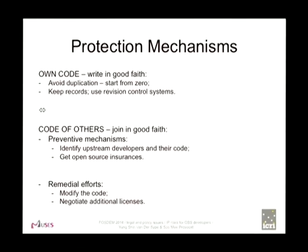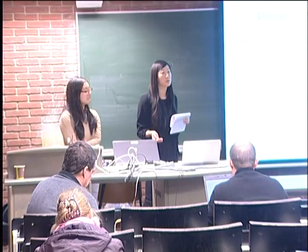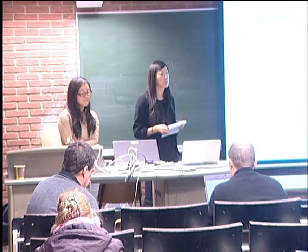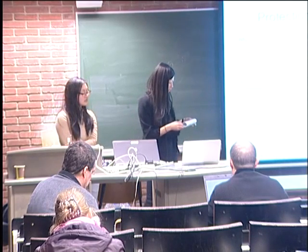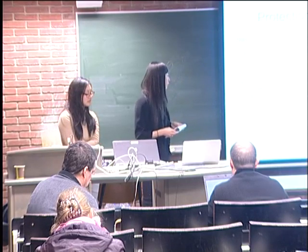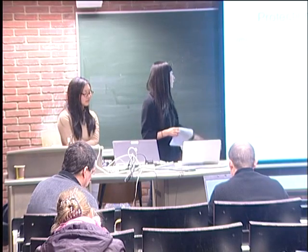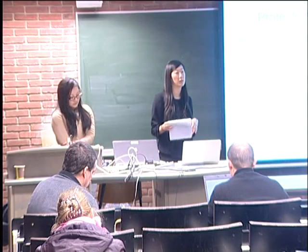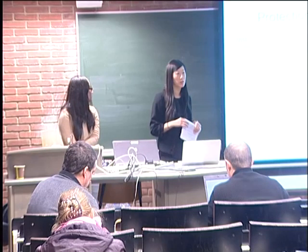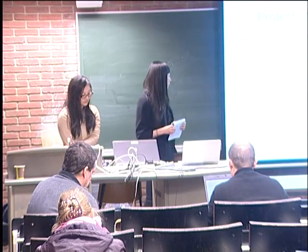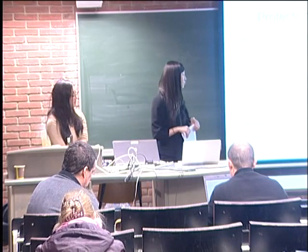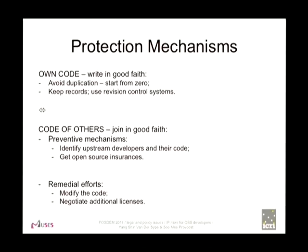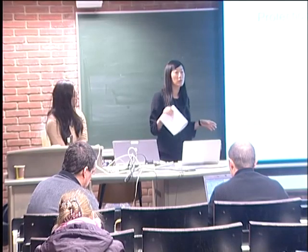Regarding the code of others — what I call joining in good faith — there are some preventive mechanisms and some remedial efforts. For prevention: only contribute clean code yourself. Be aware of previous contributions, meaning you need to identify all pieces of code and where they come from, identify the developer who wrote it, the licenses that burden the code, and what obligations and limitations follow from those licenses. So you need to read the documentation, and that will be a lot of work. You can have open source insurances, but due to the fact that they're quite expensive and don't cover all legal issues, they don't seem to become very popular. If you have figured out that someone previously used infringing code, you can try to modify the code, though that will be very time consuming — and probably only a solution when you're in the very early stages of the project.